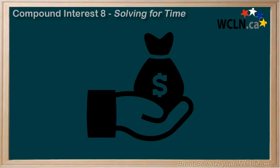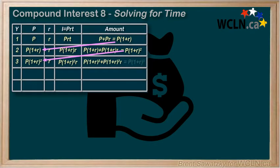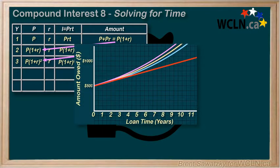At this point we've dug pretty deep into compound interest. We can derive the compound interest formula. We know what compound interest looks like on a graph, that is exponential growth.